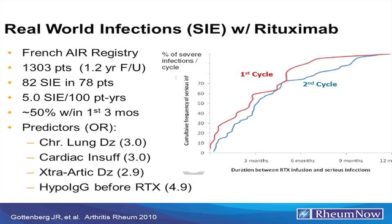Data from the AIR registry studied rituximab, and between the first and second cycle, there was not a lot of difference in infection rates over time. The SIE rate was 5 per 100 patient years, and 50% occurred within the first three months. Predictors of these events — consistent across many trials — were chronic lung disease, cardiac insufficiency, extra-articular manifestations, and being hypogammaglobulinemic before receiving rituximab.